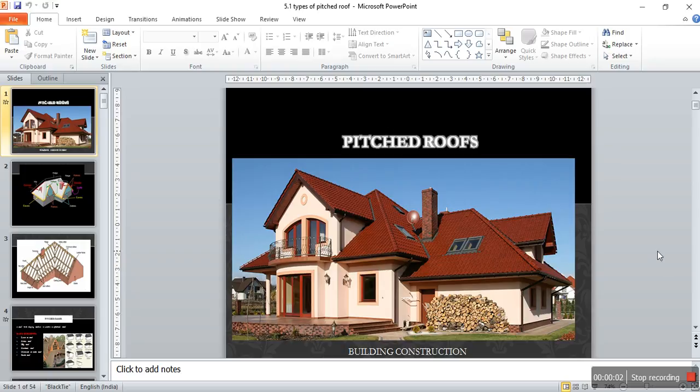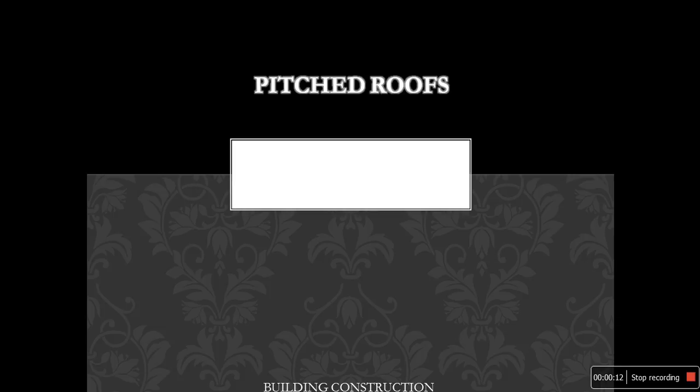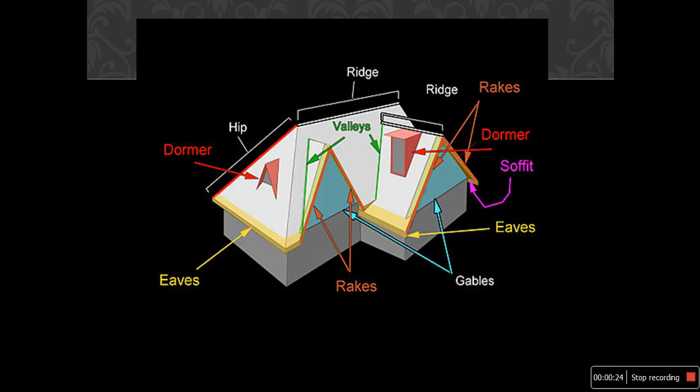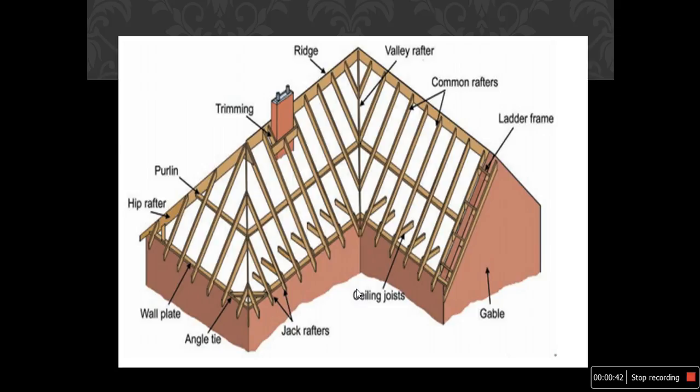We have seen different types of roofs — the first is the flat roofing system, and the second is pitched roofs. This image will give you an idea about what a pitched roof is. We'll see the different elements in the pitched roof: eaves, which drain the water, dormer, hip, ridge, rafters, soffit, and gables. The gable is the vertical member in the picture.